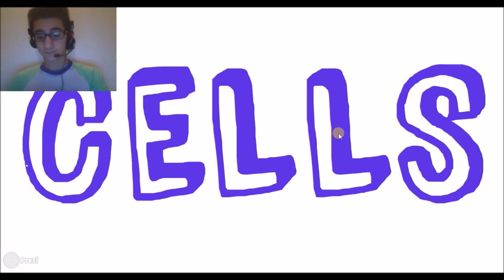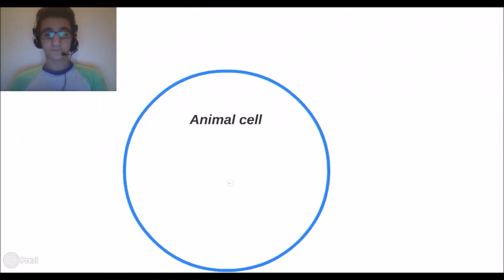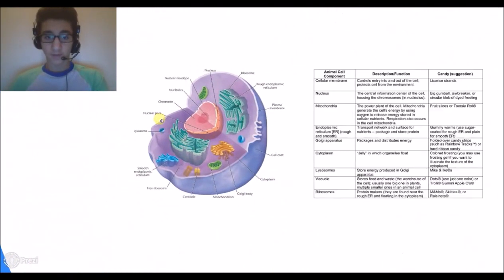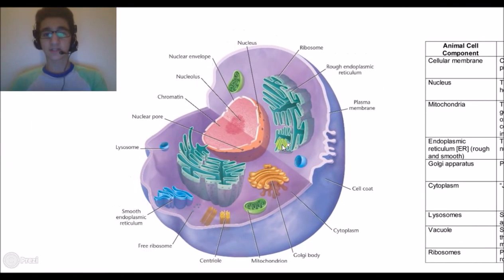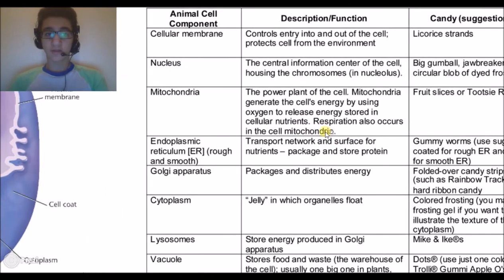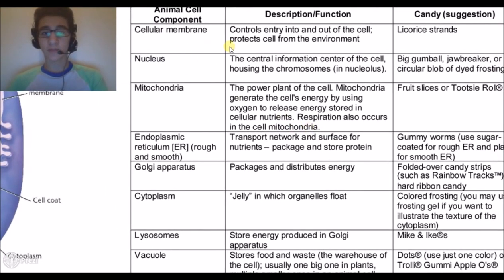So, cells. We'll start with the animal cell. Now this is how an animal cell looks like. Let's go to the components of the animal cell.